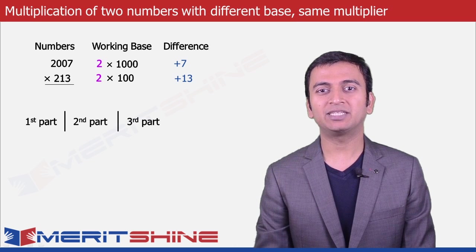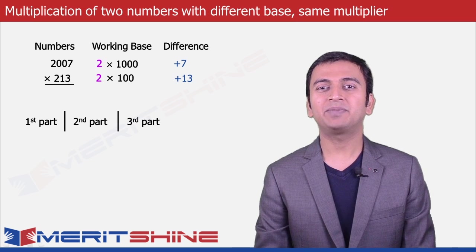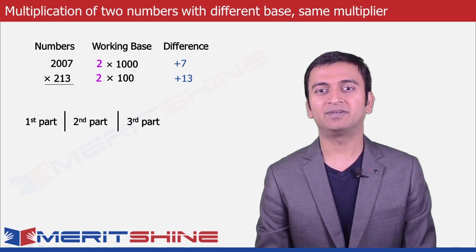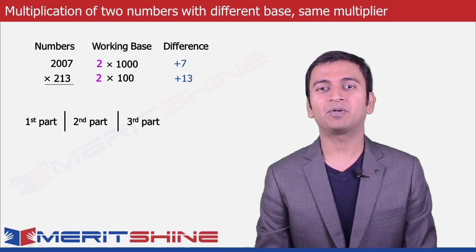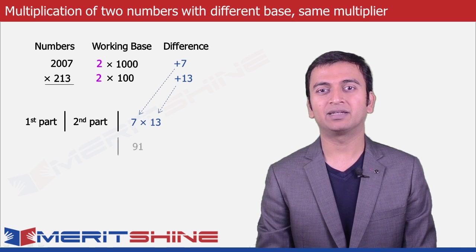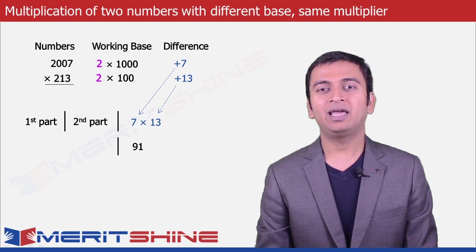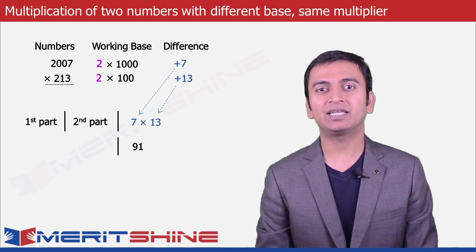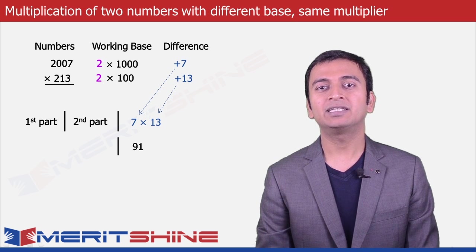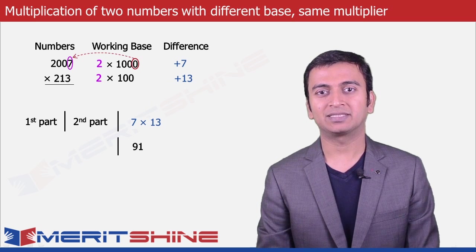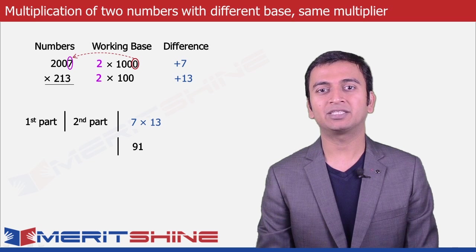We can now proceed to write down our answer, which would be in three parts. Let us begin by writing the third part first, which would be the simple product of 7 and 13, giving us 91. To find the second part, we will have to take the larger number and choose as many digits from the right as is the difference in the number of zeros in our secondary bases, which in our case is 3 minus 1.